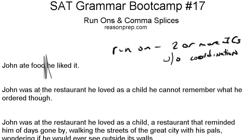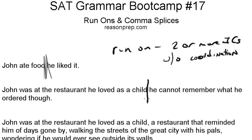Next sentence: 'John was at the restaurant he loved as a child. He cannot remember what he ordered though.' Again, problem. 'He was at the restaurant he loved as a child' — that's one independent clause. 'He cannot remember what he ordered though' — there's another. So again, we're going to need to do something — a few things we can do to fix this problem.